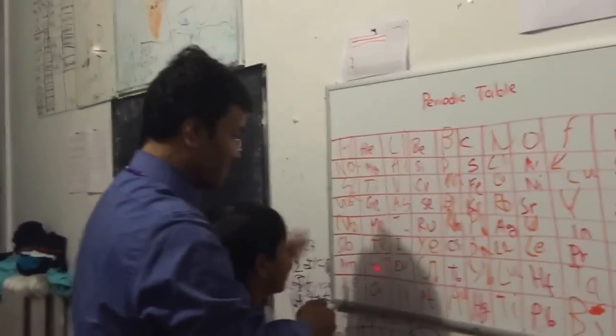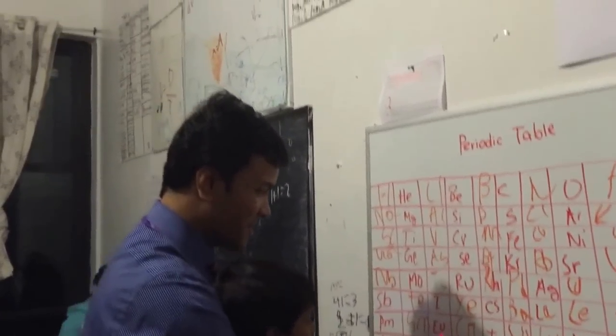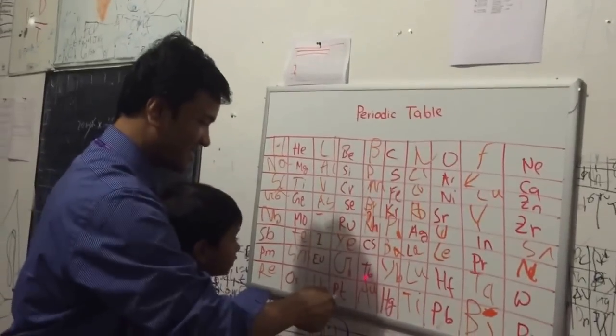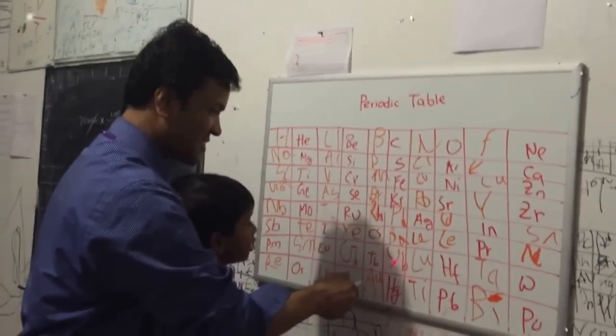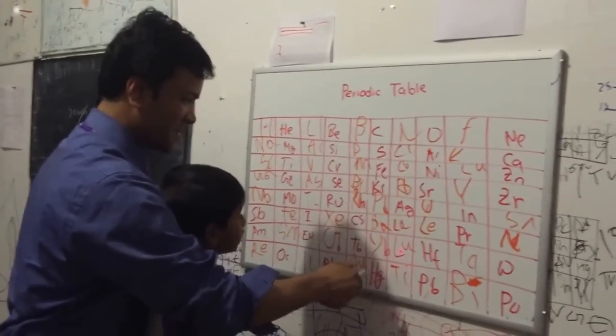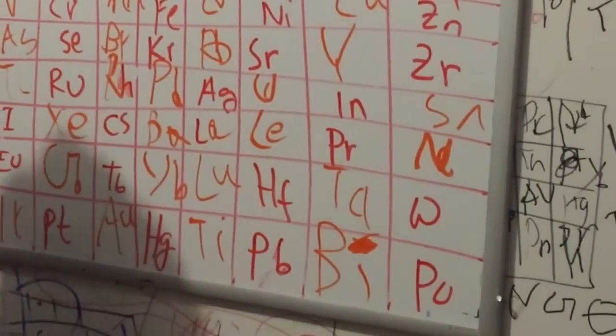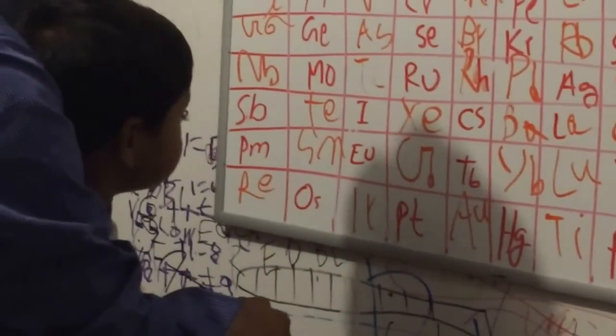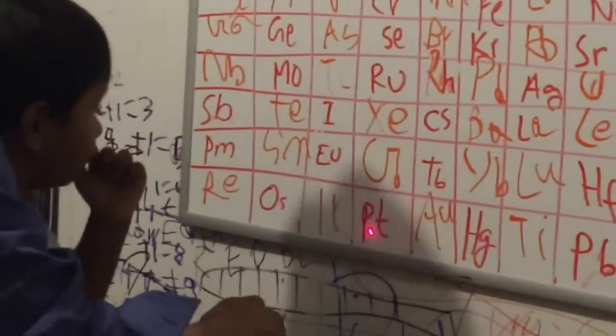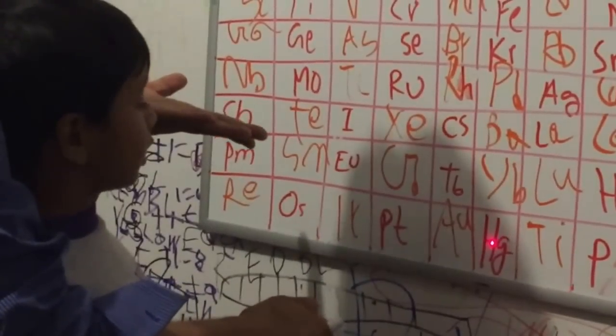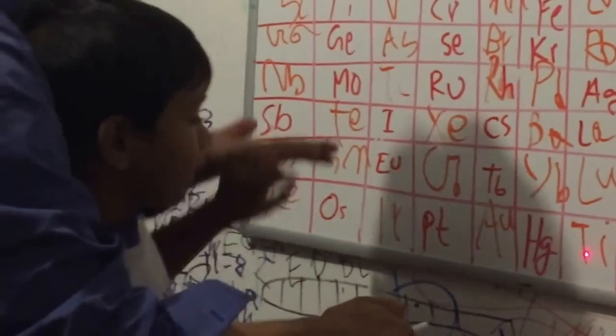Curium, ytterbium, niobium, gadolinium, terbium, erbium, hafnium, tantalum, tungsten, rhenium, osmium, iridium, platinum, gold, mercury, thallium, lead, bismuth, polonium.